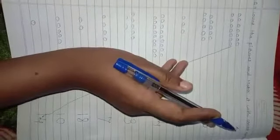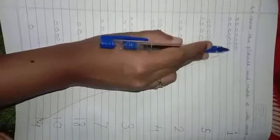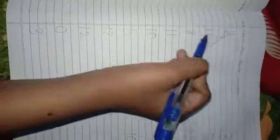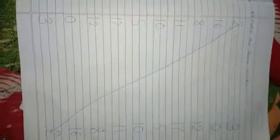Main aapko ek baar phir se recall karti hoon. Question number 1: write 1 to 20 numbers in your maths big square notebook. Question number 2: count the pictures and write correct numbers in the box. Question number 3: write missing numbers — jo missing hai woh aapko likhna hai. Question number 4: count the pictures and match it with correct numbers. And our last question is: match the same number — jo same number rahega, yahan pe agar 16 hai toh wahan bhi 16 hai, woh dekh ke match karna hai.